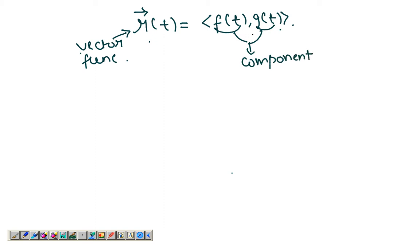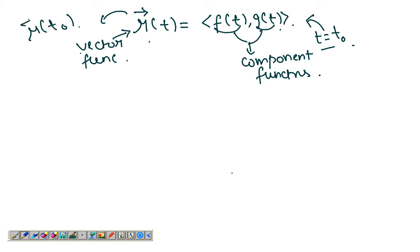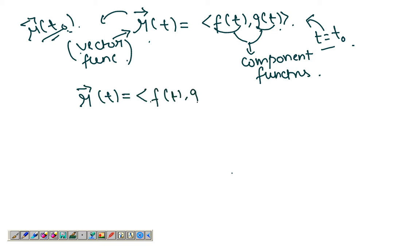The component functions can be the x and y components, the y and z components, or the x and z components. You give this function an input value — say t equals t-naught — and it gives you out r(t-naught) in the form of a vector. You can also take three components to specify three dimensions, with x, y, and z components.